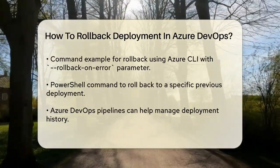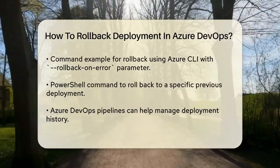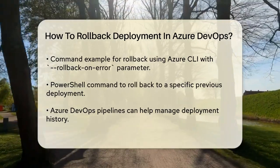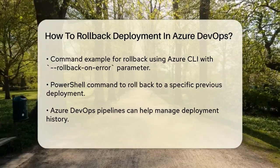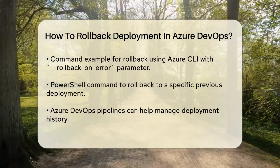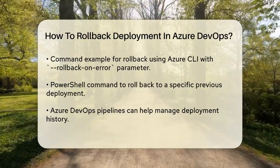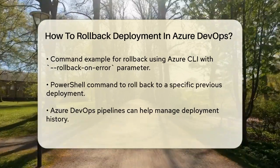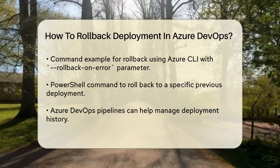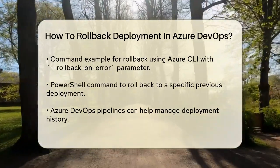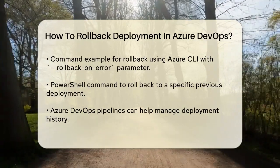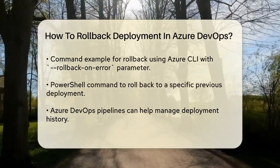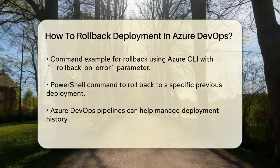If you need to roll back to a specific previous deployment, you can specify the name of that deployment. For instance, using PowerShell: New-AzResourceGroupDeployment -Name example-deployment-02 -ResourceGroupName resource-group-name -TemplateFile c:\my-templates\azuredeploy.json -RollbackDeploymentName example-deployment-01. This will redeploy the specific deployment named example-deployment-01 if the current deployment fails.